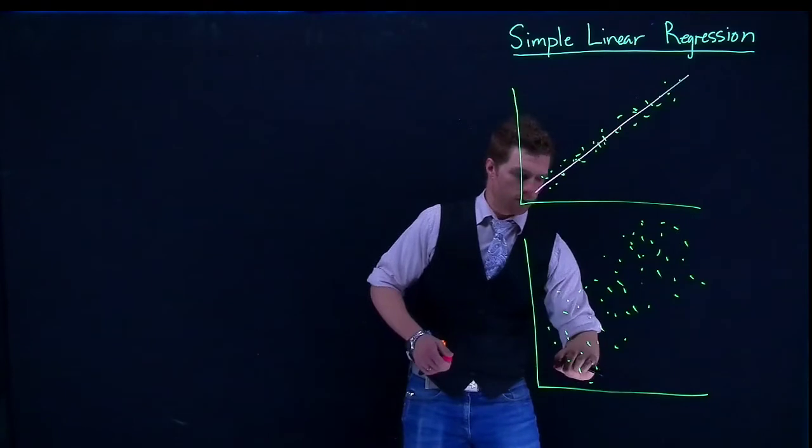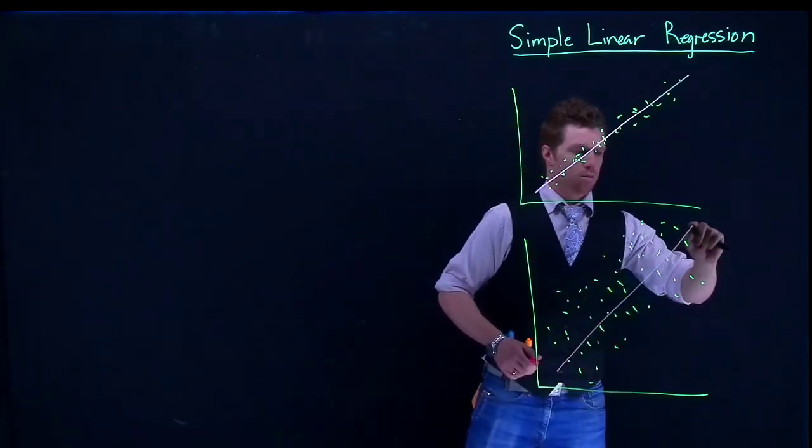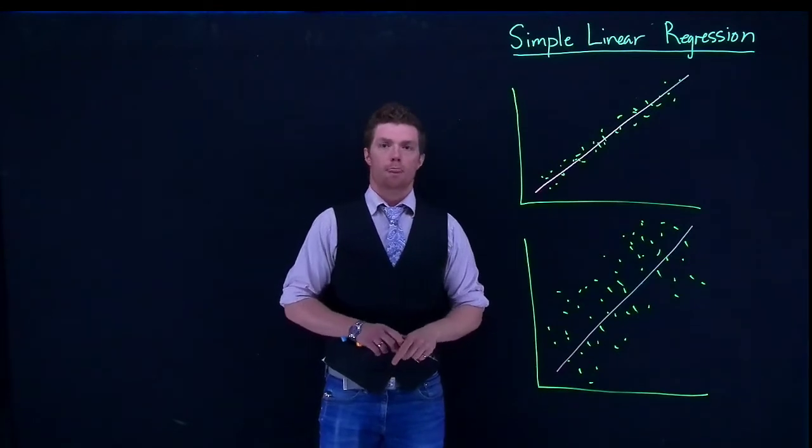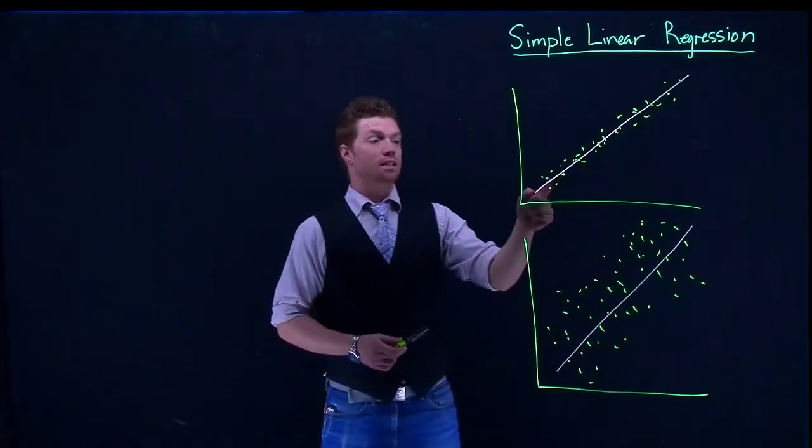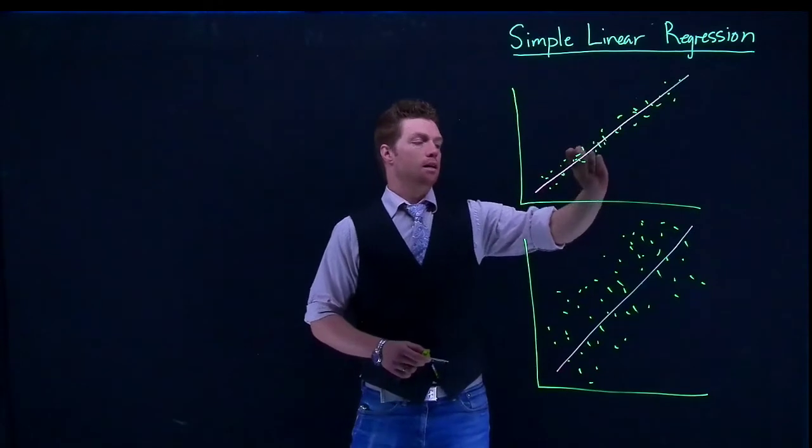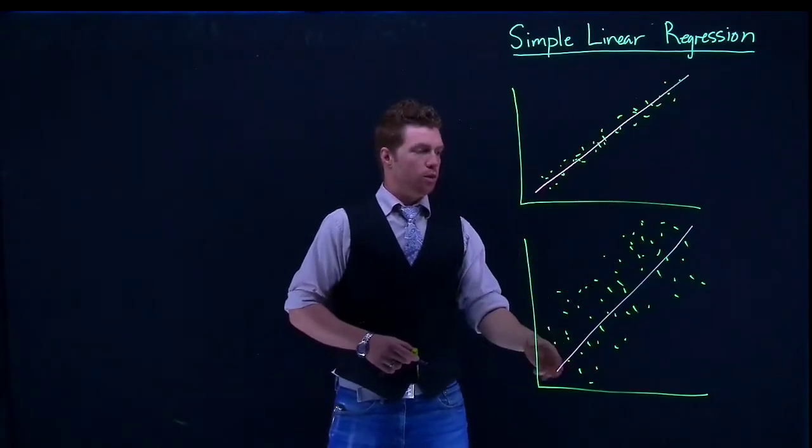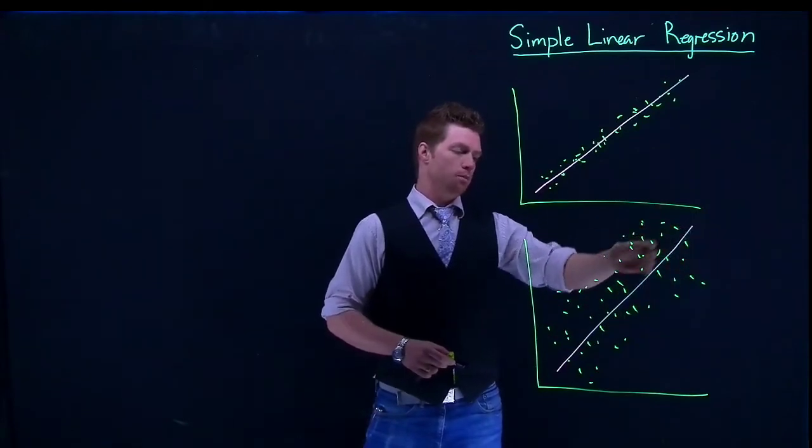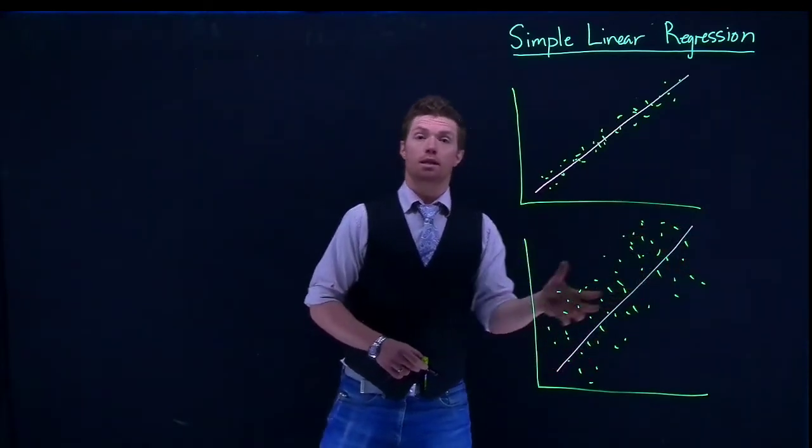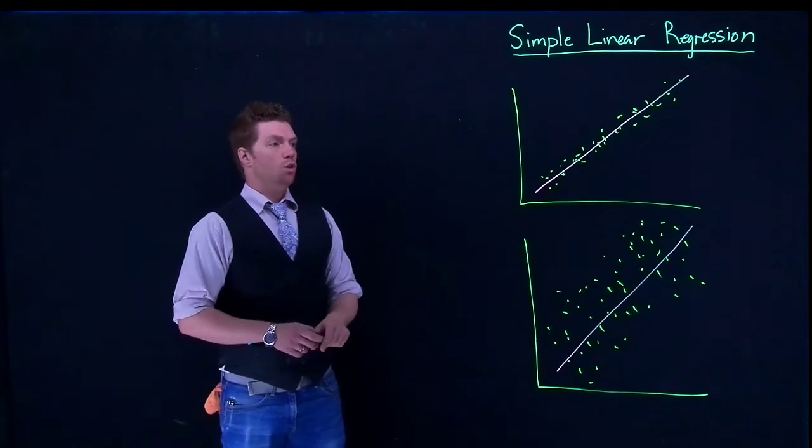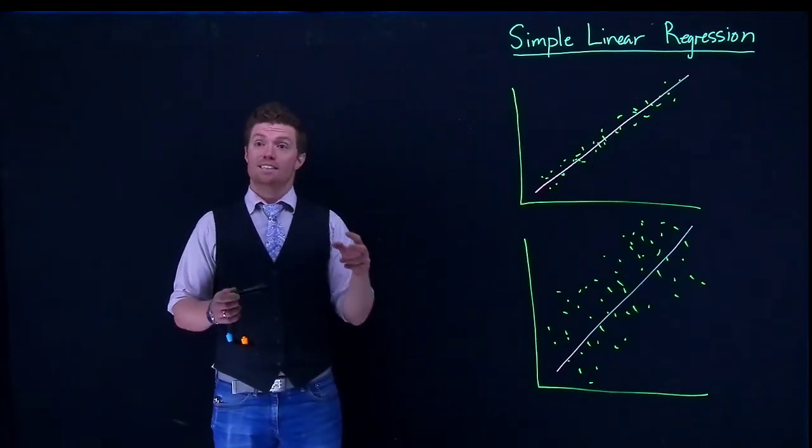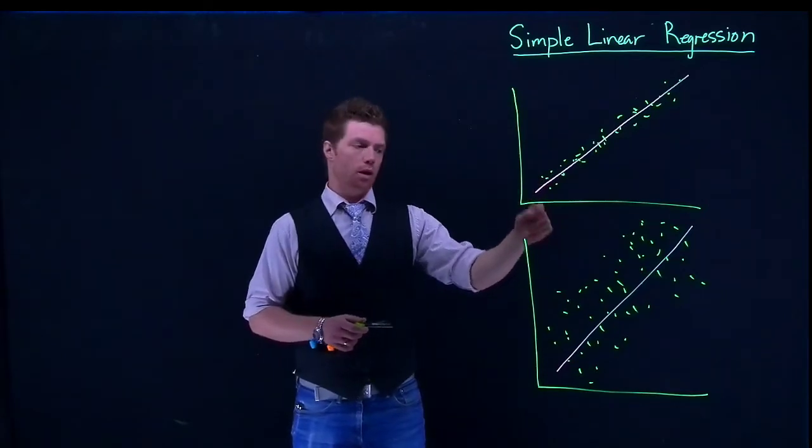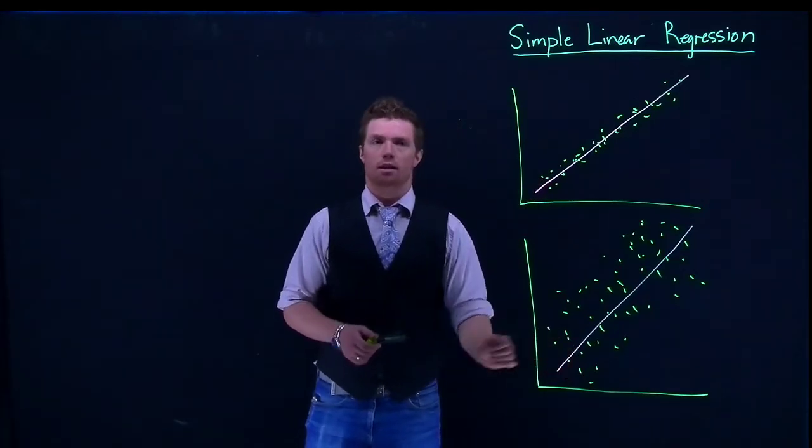All right so there's a big difference between these two models that we have. One is very tightly bunched about our line. The other one is we still have a linear relationship, it's still kind of this positive relationship, but we notice that there's a lot more variability in the data. So this one is a better model or this one does a better job of describing what's going on than this model down here.